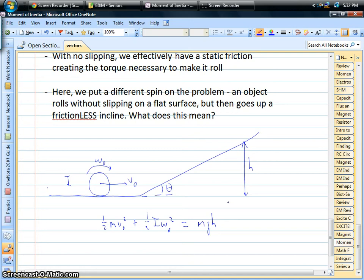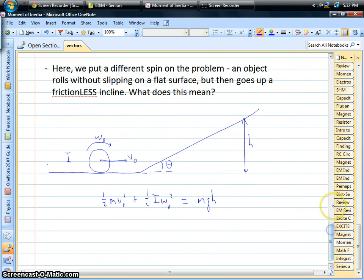If there's no slipping, then there's no heat, there's no work done by friction, so life is good, and that's all we have to do. Okay, but let's see what happens if suddenly you write this down, where there's no friction just on the hill part.